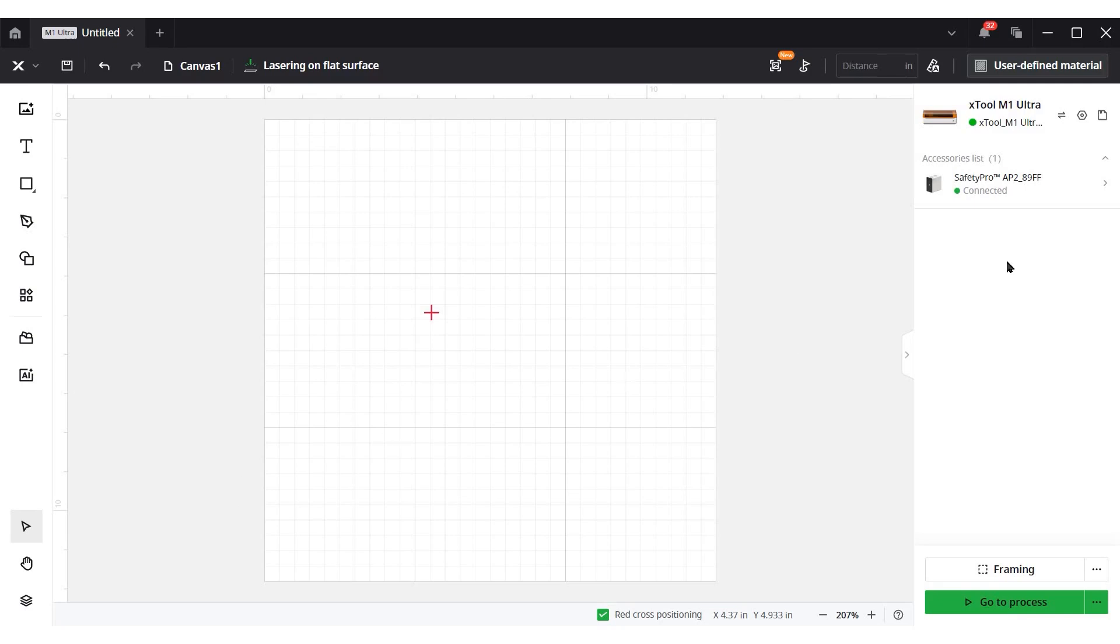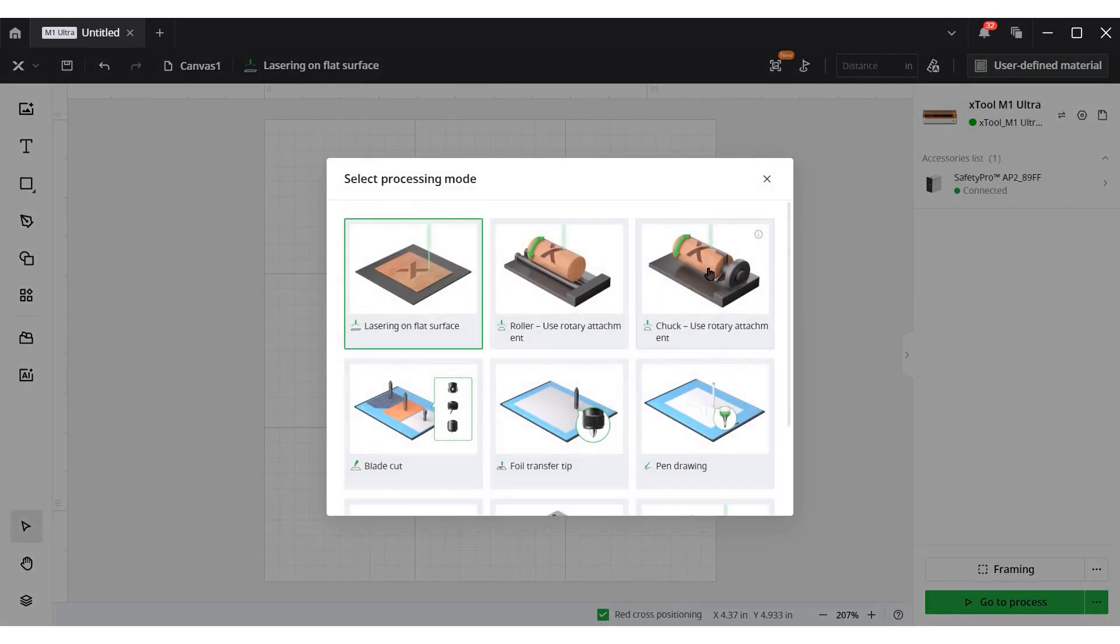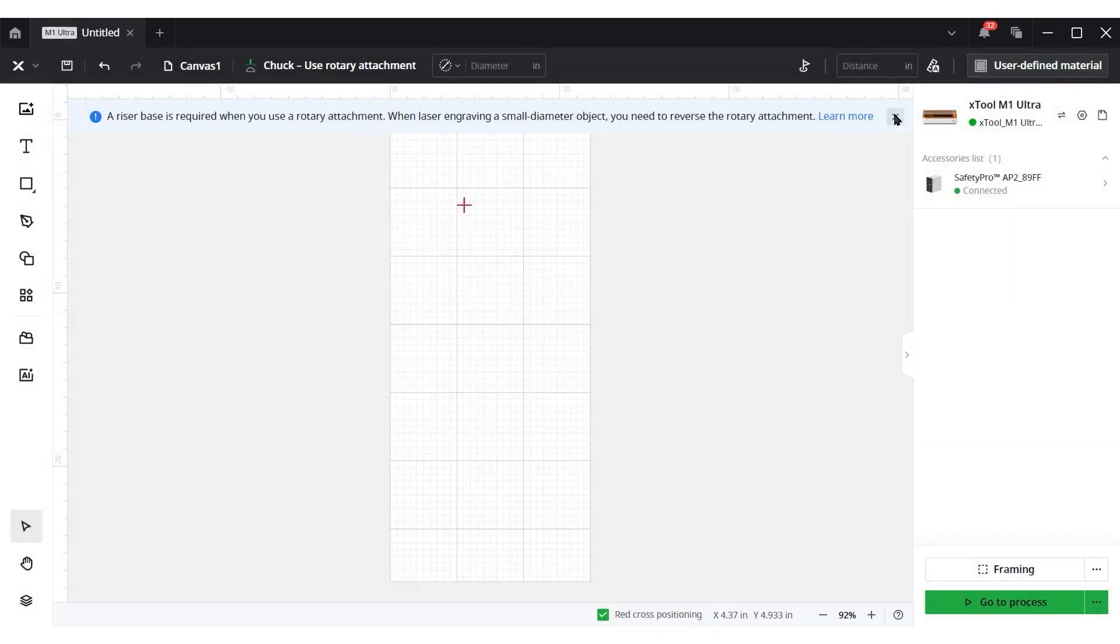Here we are in Xtool Creative Space. Over on the right, my M1 Ultra is connected, so is my AP2. I am venting into that today. First thing we need to do is tell the software that we are using the chuck and not lasering on a flat surface. So that's up here on the top, and I can choose the chuck on the right. And I really do like that we have arrows that it's showing you which way it's going. You can also pick the rollers if you're using it that way, but we are doing the chuck. So our screen changes a little bit. So these red crosshairs indicate where they are on the tumbler right now. So over here on the right hand of the screen, that is the bottom of my water bottle. And on the left hand of the screen, that is the top of my water bottle. So now we're going to enter the perimeter. And we said that was 12 and a quarter inches. Now I'm going to auto-measure.